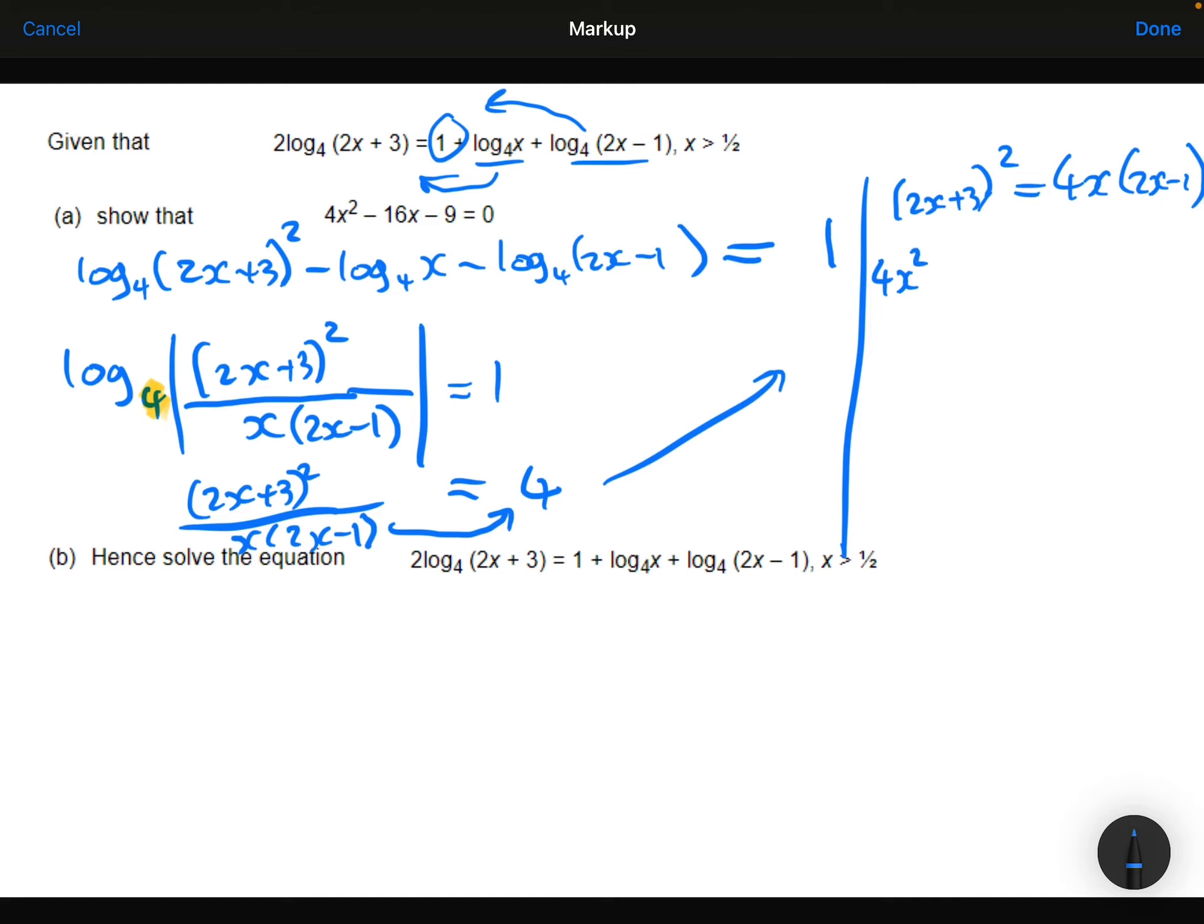Expand the bracket. So 2x squared is 4x squared. 2x times 3 is 6x, but we'll have 2 of them, and 3 squared is 9. On the right-hand side, 4x times 2x is 8x squared, and 4x times minus 1 is minus 4x.